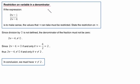Here's an easy one for you. Restriction on variable in a denominator. So our problem says that if this expression, 9v minus 1 over 2v minus 4, is to make sense, then the values that v can take must be restricted. State that restriction.